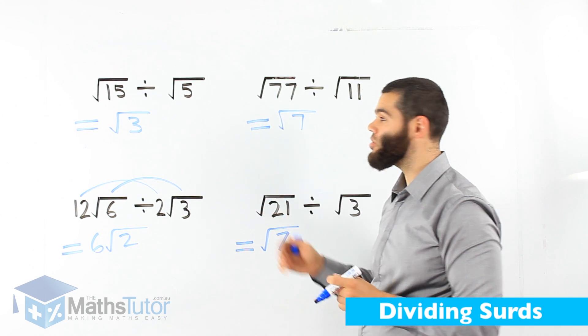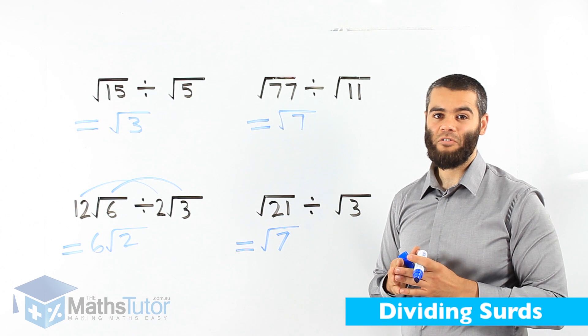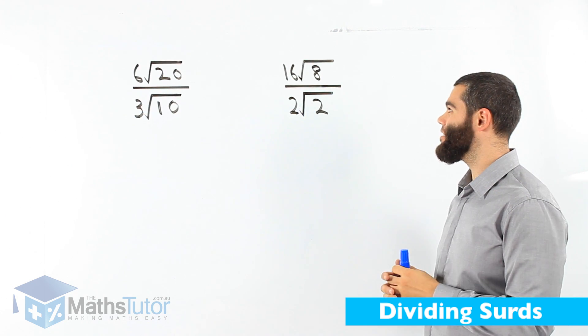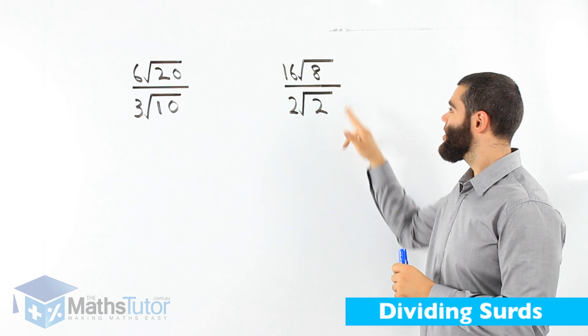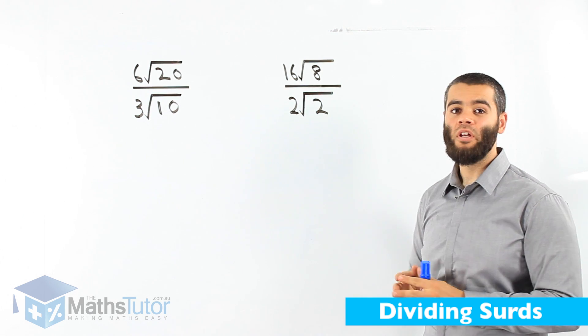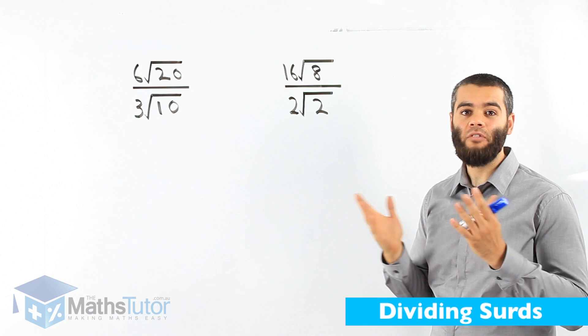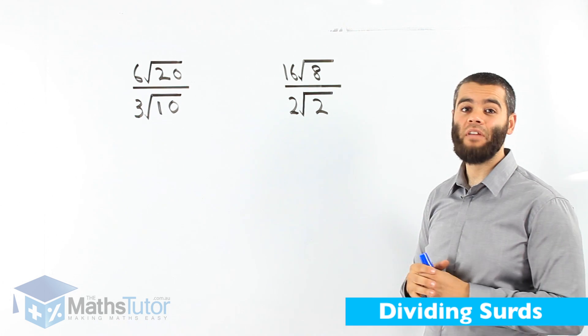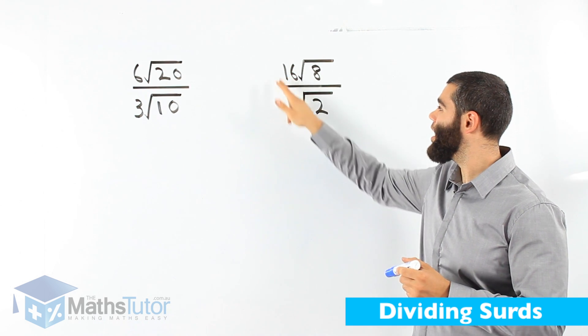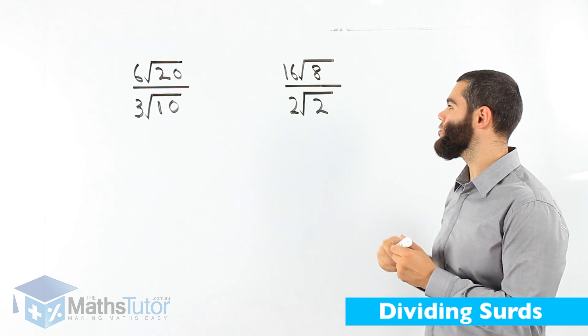Now let's do some division using fractions as well. Sometimes we are faced with a question like this: 16 root 8 divided by 2 root 2. It's still division, but it's written in fractions. But we follow the same rules. So the whole numbers divide and the surds also divide.